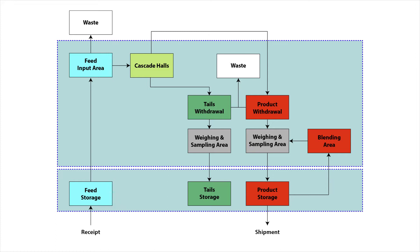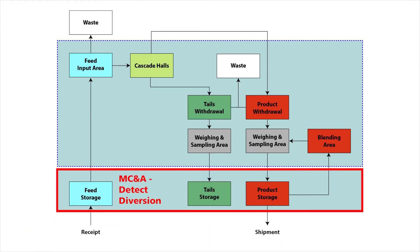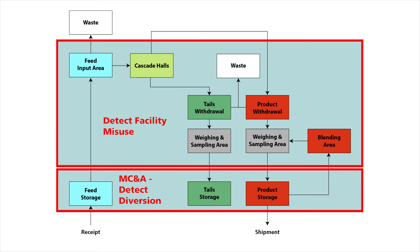Outside the cascade halls, the safeguards activities are primarily based on material control and accountancy to deter or detect possible diversion. Inside the cascade halls, safeguards activities verify the proper use of the facility and in particular that no HEU is being produced.